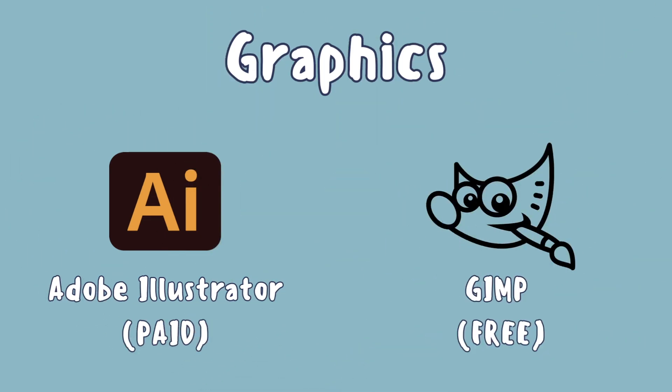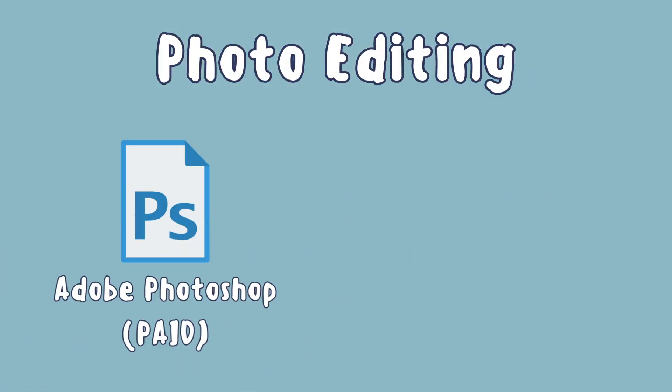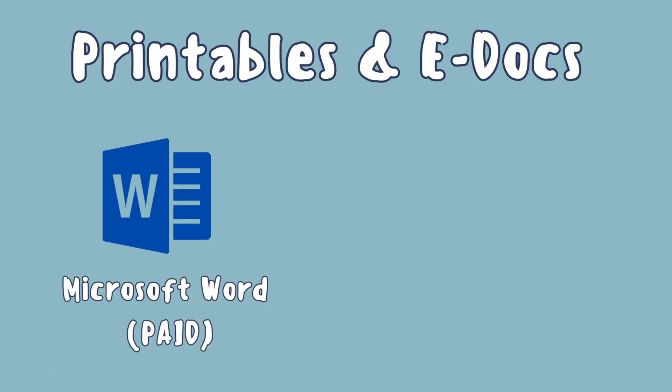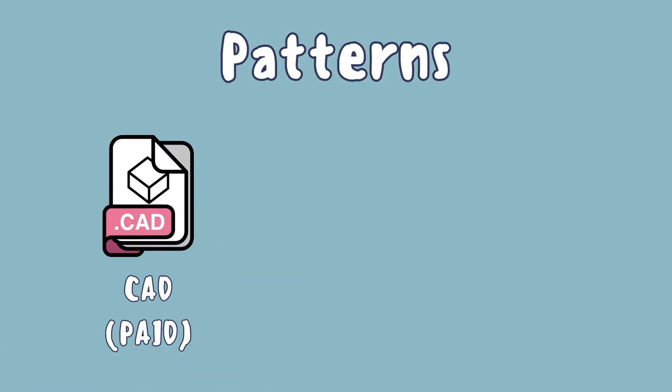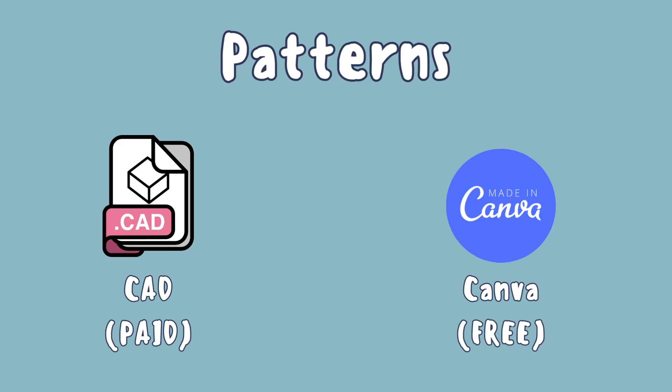There are plenty of different options online, but here are a few I recommend for different jobs. For graphics you can use Adobe Illustrator, which is paid, or GIMP, which is free. For photo editing there's Photoshop, which is paid, and again GIMP, which is free. For printables and e-documents you have Word, which is paid, and my all-time favorite program Canva, which is free. For digital patterns I'd recommend CAD (Computer Aided Design), which is paid, or again Canva, which is free. I'll be using Canva for this video because it's free, it's the program I have the most experience with, and my digital design skills are very basic — Canva is just absolutely perfect for me.